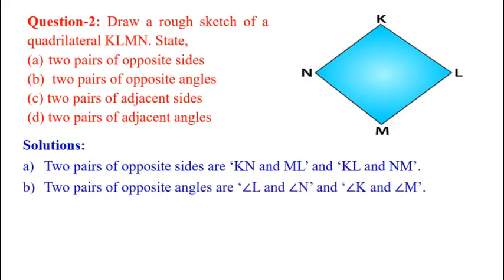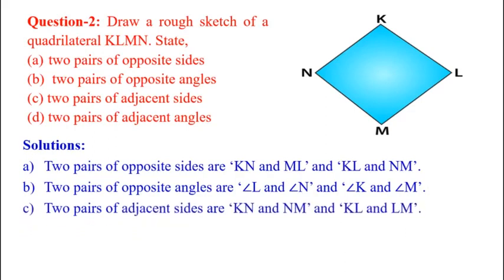Two pairs of adjacent sides are KN and NM, and KL and LM.